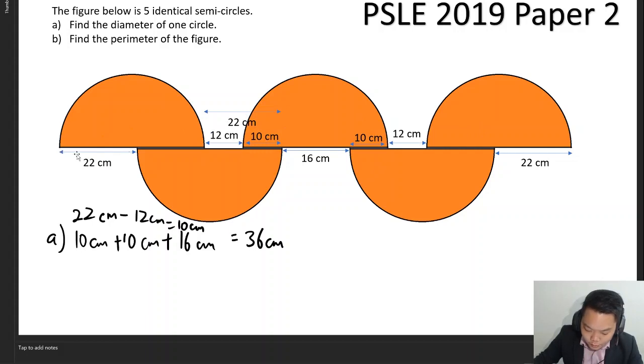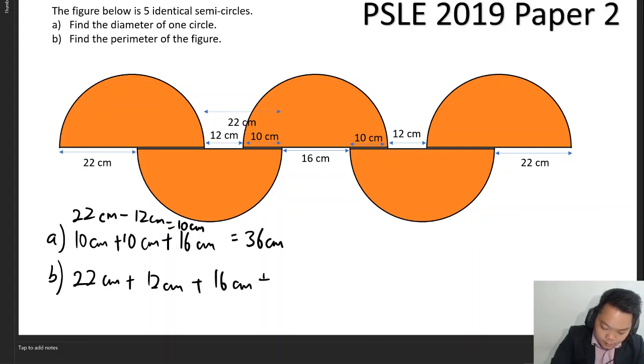What does the outer boundary in this figure consist of? It consists of five semicircle circumferences and all these lengths over here: 22, 12, 12, 16, 12, and 22. Since the pi value wasn't given to me, I'm going to use pi by itself. We have 22 cm plus 12 cm plus 12 cm plus 22 cm plus 12 cm plus 22 cm plus 12 cm plus 12 cm plus 22 cm plus 5 copies of the circumference of the semicircles, which is half times pi times diameter 36 cm.